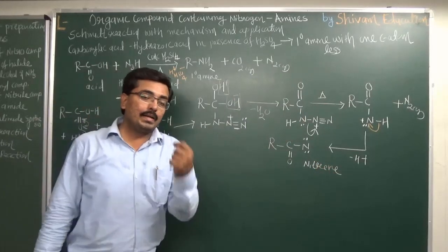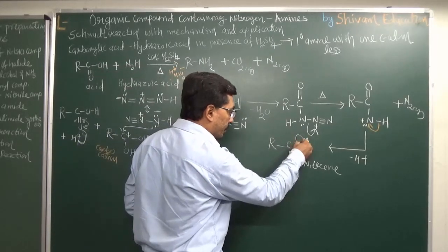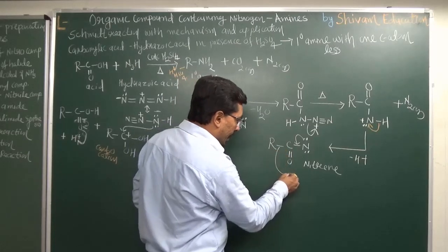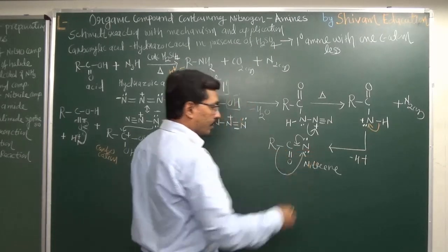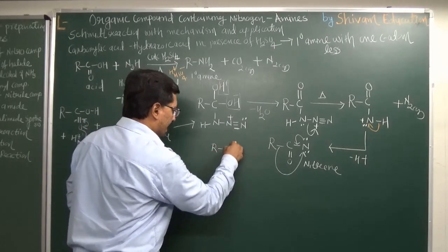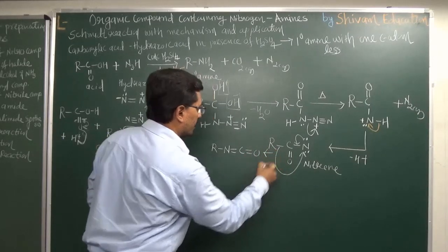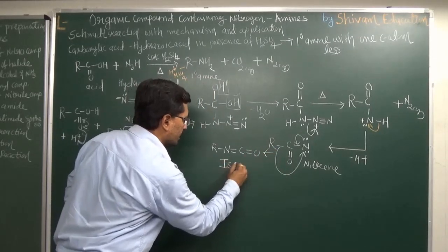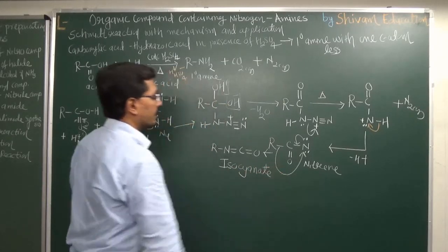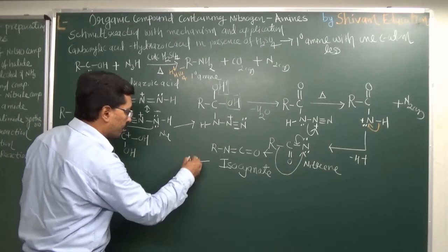The nitrene obtained is unstable. To obtain stability, nitrogen donates its electron pair to carbon, and simultaneously the alkyl group (R) with its electron pair migrates onto nitrogen. As a result, we get the structure R-N=C=O, which is known as an isocyanate.